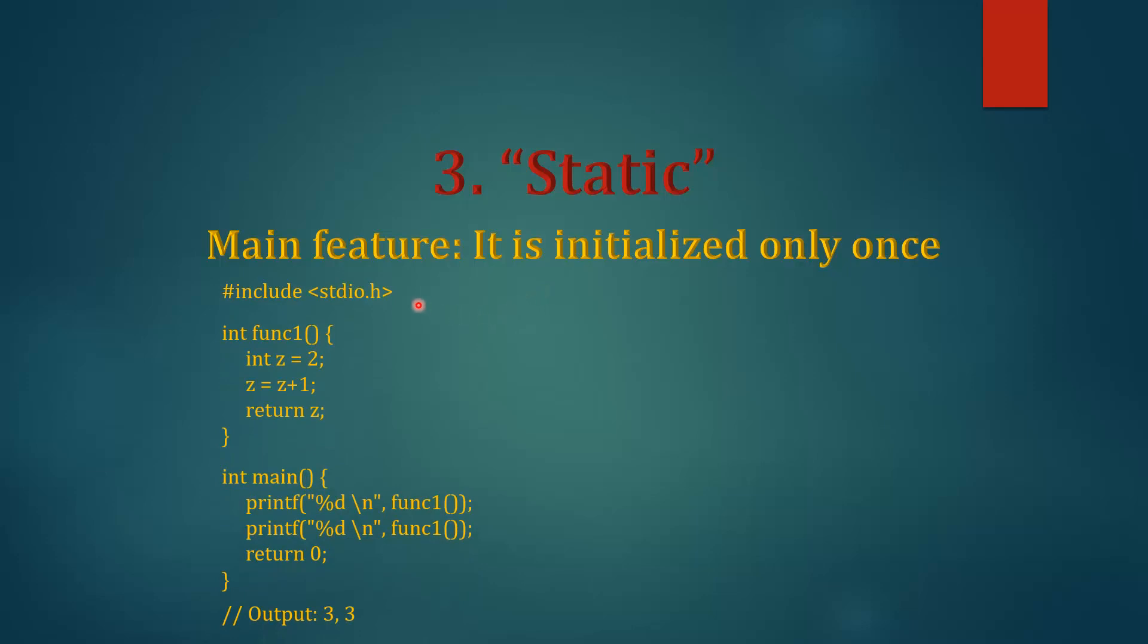See, this is an example of a normal C code in which we have not used static keyword. We are using normal integer. This is a function which we are calling from our main function. We are trying to print the value of Z that is returned from this func1 function. So as you can see, it is a very simple program. What it will output is Z equal to 2, Z equal to Z plus 1, that is 3, and return 3. So it will print 3. Again it will be called and it will print 3, so output will be 3 and 3.